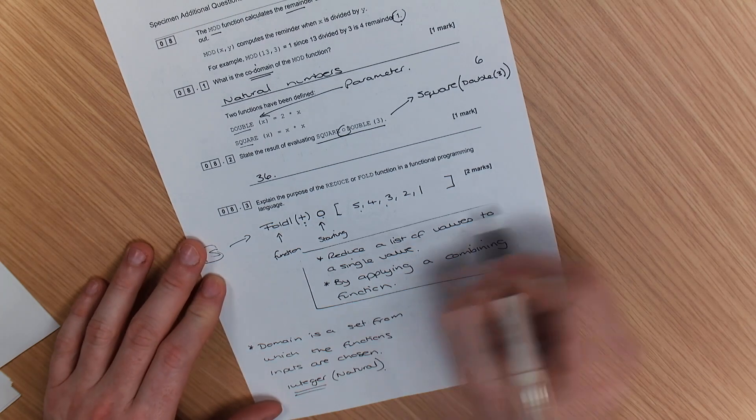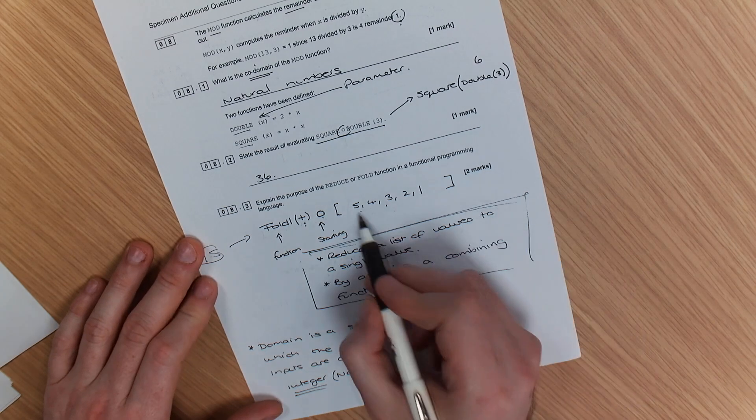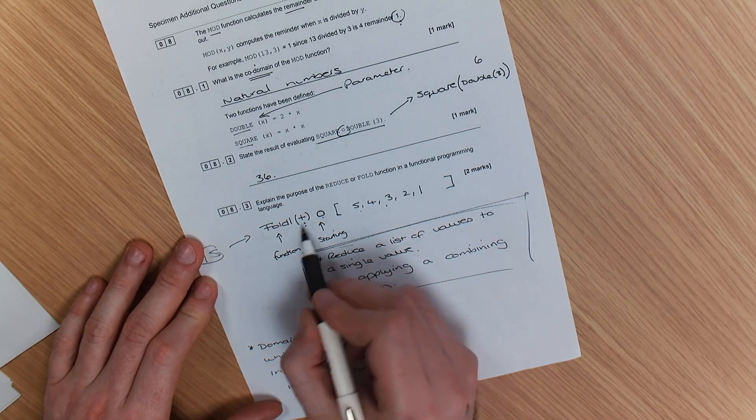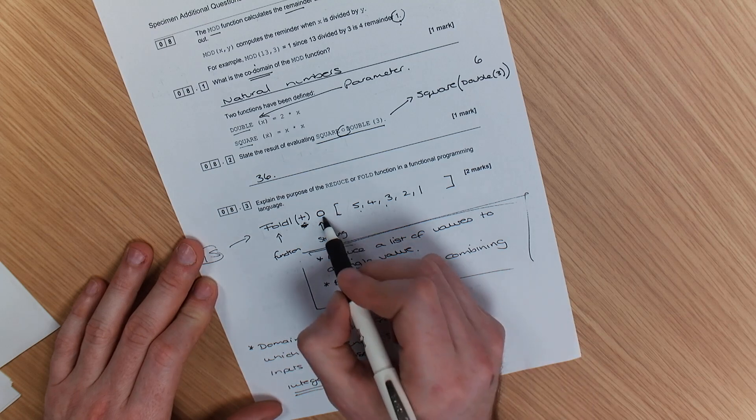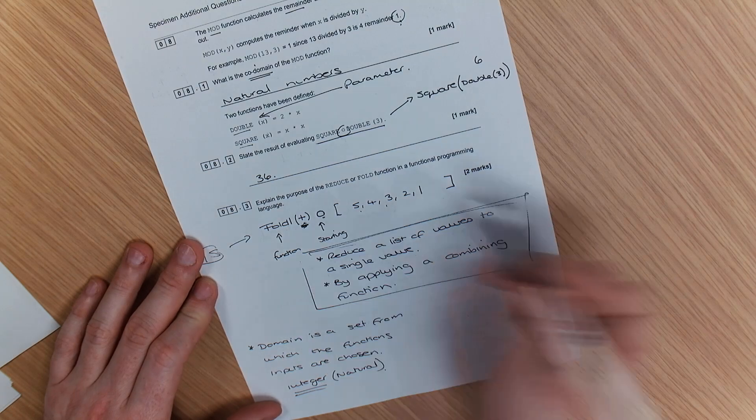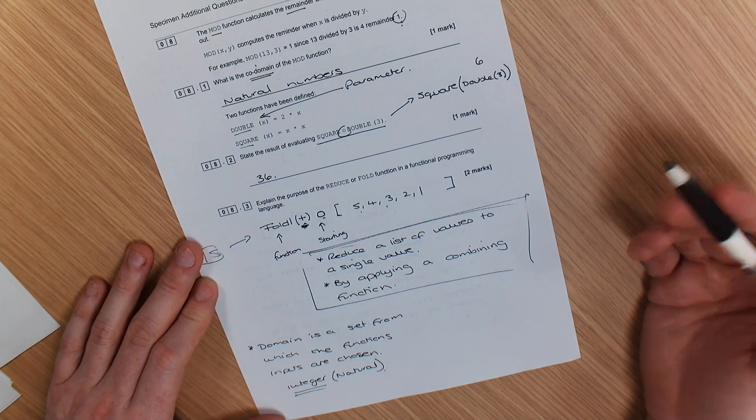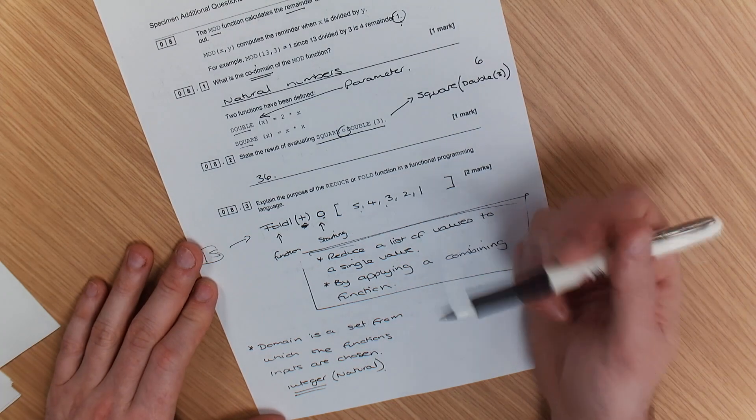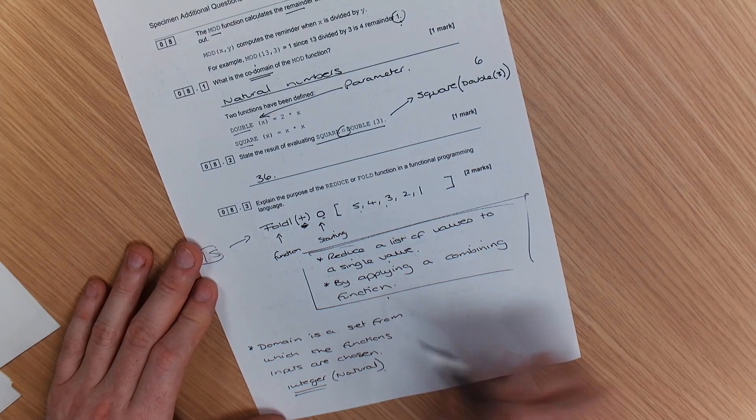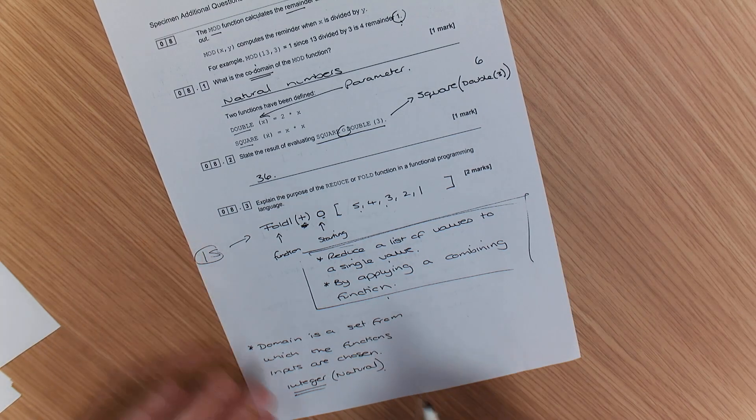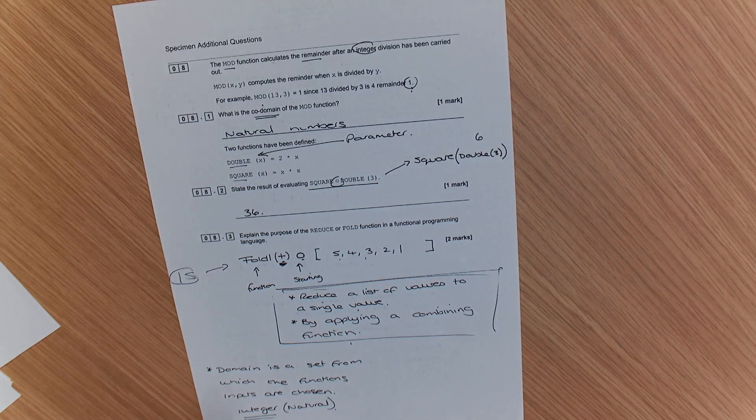So five plus four plus three plus two plus one by using this operator here. That would be our starting value. So if it started at one, we would have probably ended up with 16, or we could start with a list. But we reduced the values to a single value by applying a combining function. That is the next set of those questions.